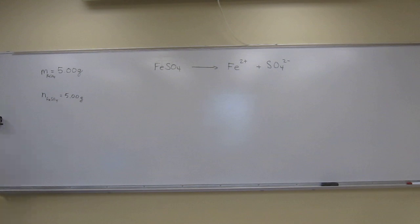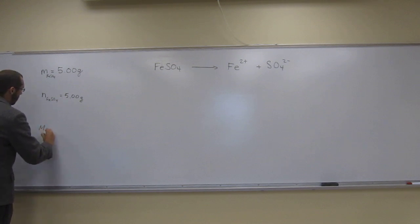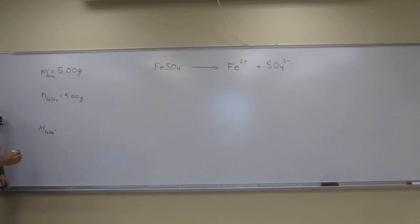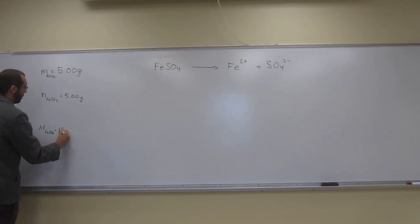The periodic table here, so we've got 55.85 plus 32.07 plus 4 times 16. So the molar mass of iron 2 sulfate is 151.92 grams per mole.